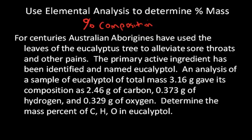Here's an example. For centuries, Australian Aborigines have used leaves of the eucalyptus tree to alleviate sore throats and other pains. The primary active ingredient has been identified and named eucalyptol. An analysis of a sample of eucalyptol of total mass 3.16 grams gave its composition as 2.46 grams of carbon, 0.373 grams of hydrogen, and 0.329 grams of oxygen.